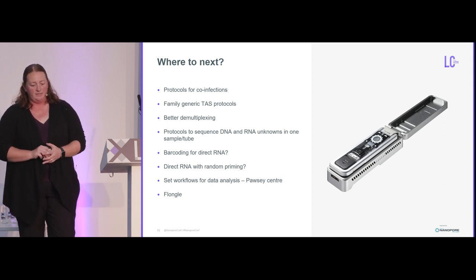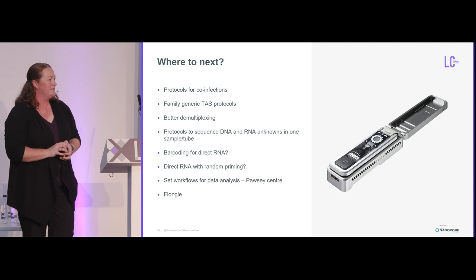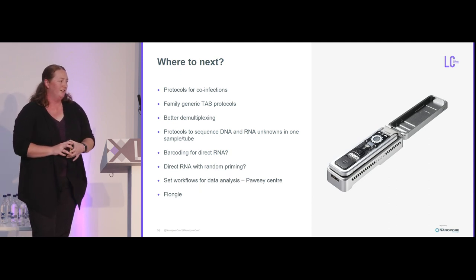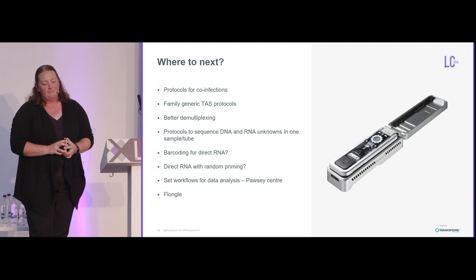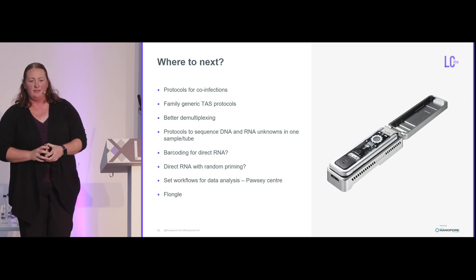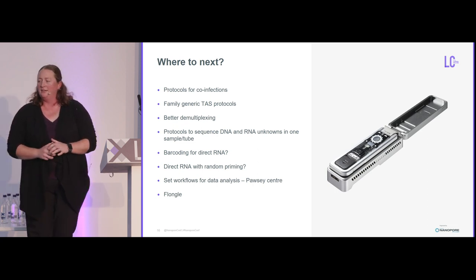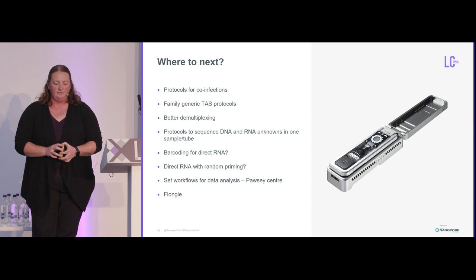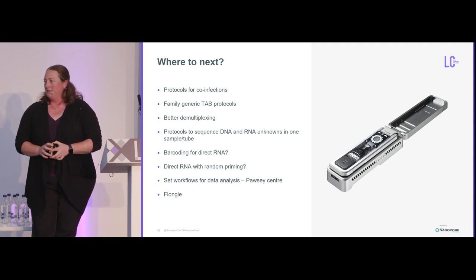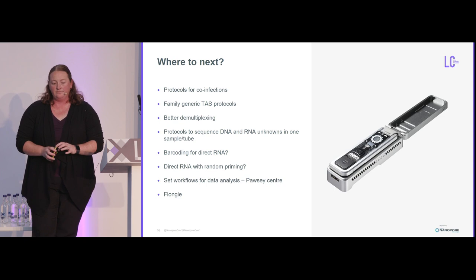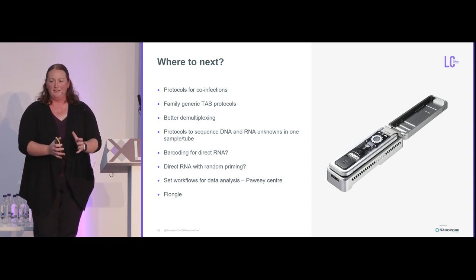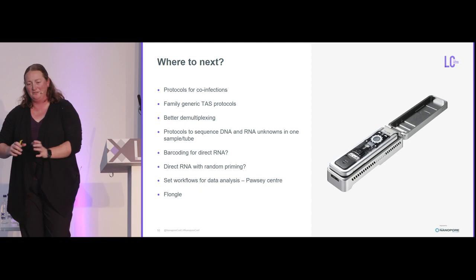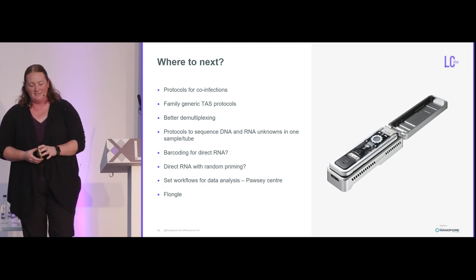Going forward, I'm interested in protocols that specifically look at co-infections, and in things that might be able to take into account both DNA and RNA. I'm also looking at having a bit of a play with the adapters for the direct RNA kit — I've ordered some that are going to be specific to particular plant virus families to see how they go. We want to try random priming on that as well. As soon as you fix one part of the pipeline, it tends to have a flow-on effect — the next step becomes the bottleneck, and for us that's data analysis.